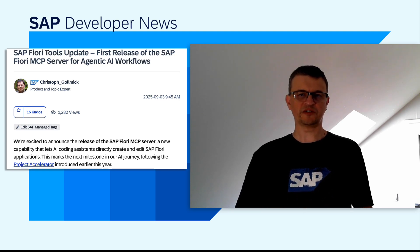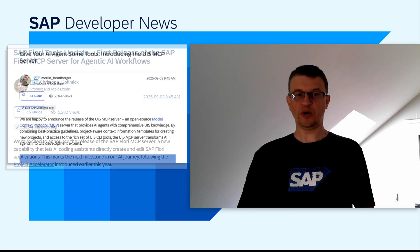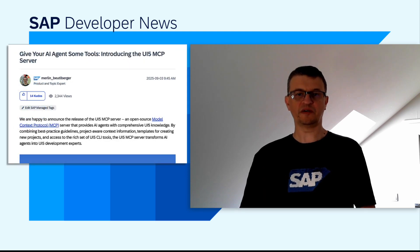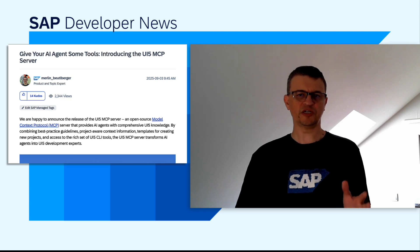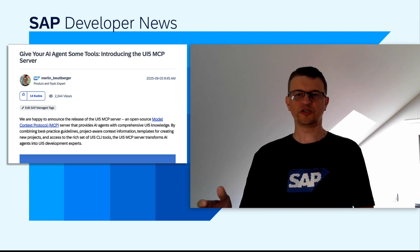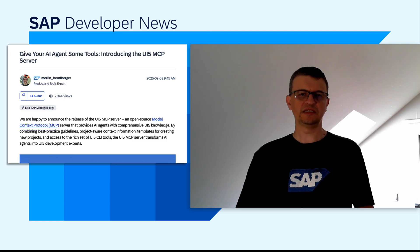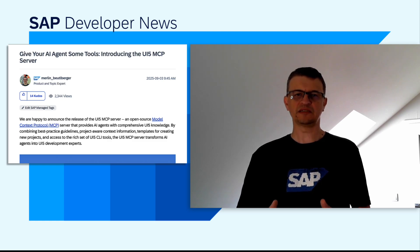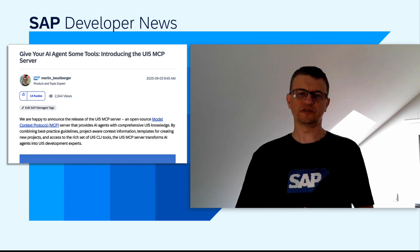The server is actually available as an experimental release. The UI5 MCP server equips your AI agent with six tools, ranging from best practice guidelines and project scaffolding, to searching the API reference, linting code, and fixing deprecated APIs, providing insights into the project details.